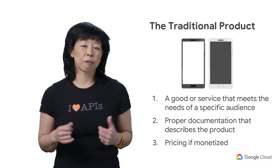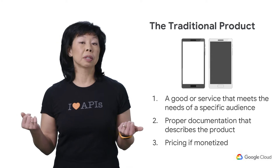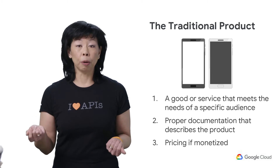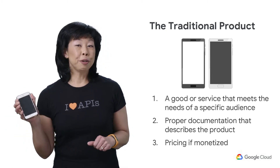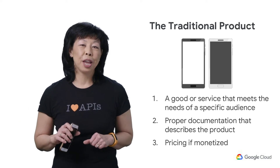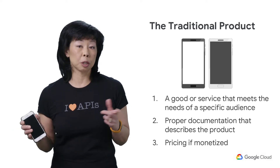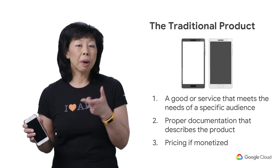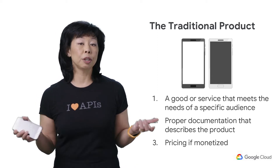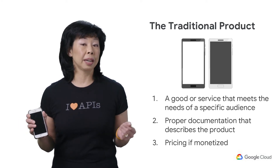The traditional product has been around for hundreds of years and is very easy to understand. Think of your purchasing experience as you shop for just about any product. If you are on the market for a mobile phone, you know that you can go to just about any online website and search for multiple options. In order to make a purchasing decision, you want to read through a description of the phone to determine if it has the features that you want. You might review the how-to documentation so you can understand how to use it and determine if you like the user interface. And of course, you might look at the price to ensure that it fits in your budget.